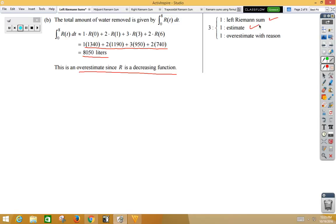You get one point for the Riemann sum, one point for the correct answer, and one point for the overestimate. One point for setting up the Riemann sum, one point for the answer, one point for the reasoning.